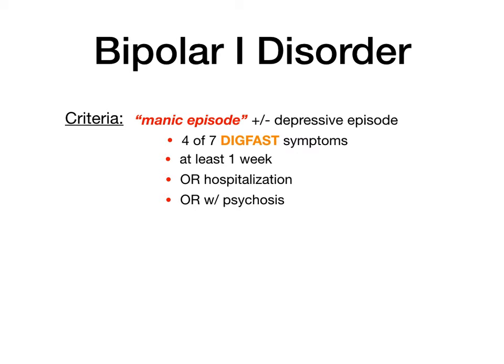In bipolar 2, you don't get mania — you get something called hypomania. In cyclothymia, you get alternating hypomania with something called dysthymia. But the only bipolar spectrum disorder that actually features a true manic episode is bipolar 1 disorder.